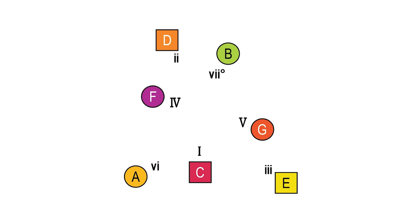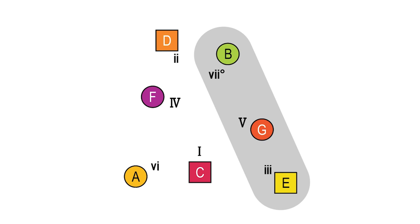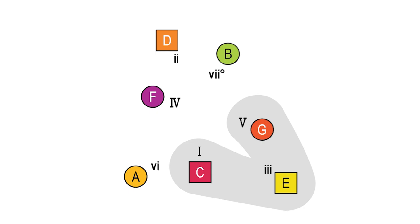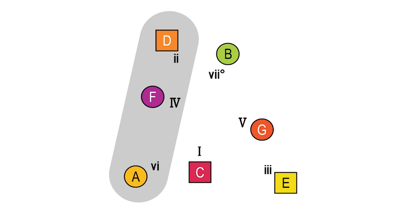For example, we have the major one chord — in this case C major — which shares notes with E minor, the minor three, which in turn shares notes with G major, the major five chord, which leads to the diminished seventh chord, then the minor two, the major four, the minor six, and then back to the major one chord. All of the chords in this circle of thirds overlap or bleed seamlessly into one another. And these connections between harmonies — the notes that are shared between them — inform the flow of chords within a given progression.